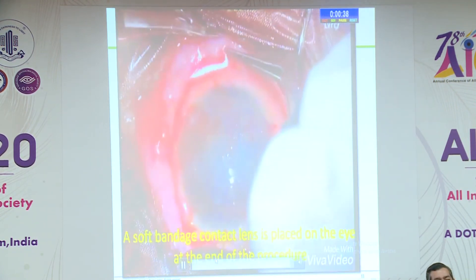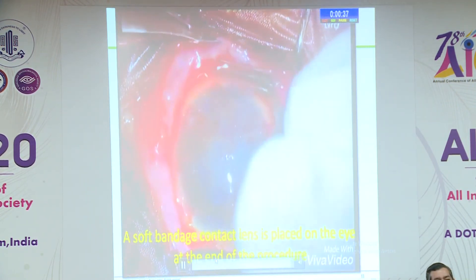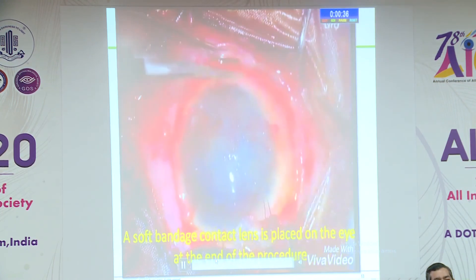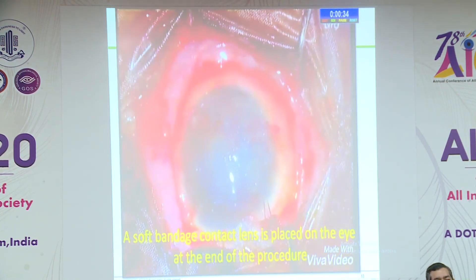When you have a contralateral healthy eye, autologous SLET works very well. When you don't have one, you may need to look for a donor — maybe a sibling — but then you have to put the patient on an immunosuppressive.